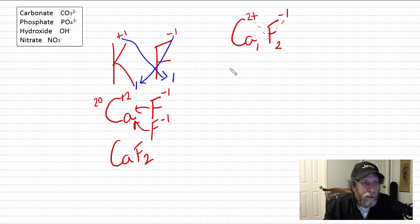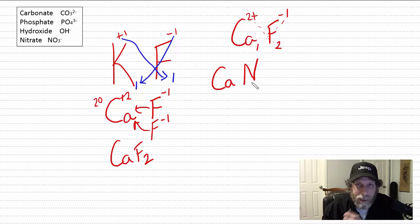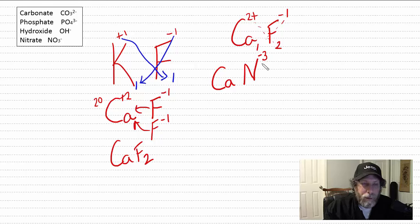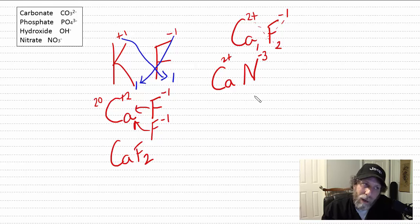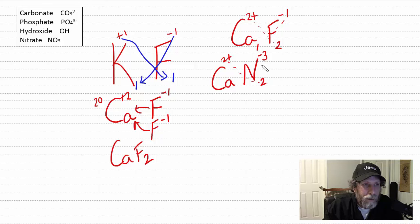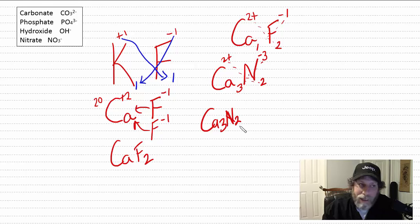For calcium nitride: nitrogen forms a minus three charge — atomic number 7, two in the first shell, five in the second, so it needs three electrons. It's easier to gain three than lose five. Calcium is two plus. Cross-down: the two goes to nitrogen, the three comes to calcium — the formula is Ca₃N₂.